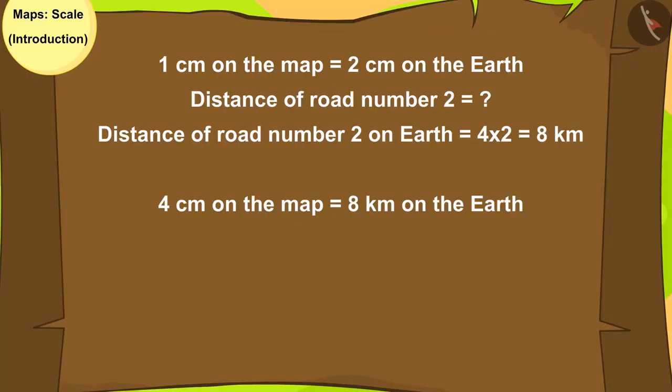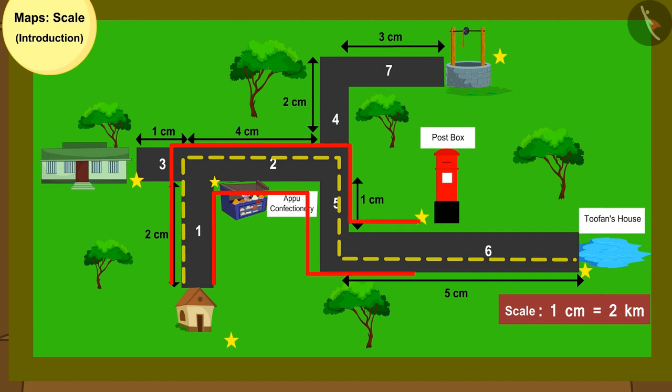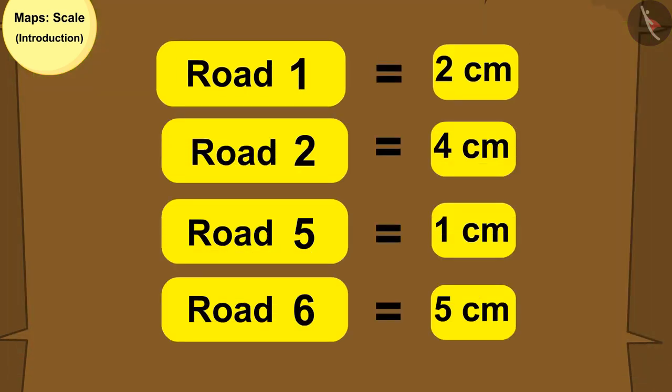Kids, your answer is absolutely correct. The distance of road number 2 is 8 km. Here the distances of all the roads coming in the way of Golu are shown in cm.